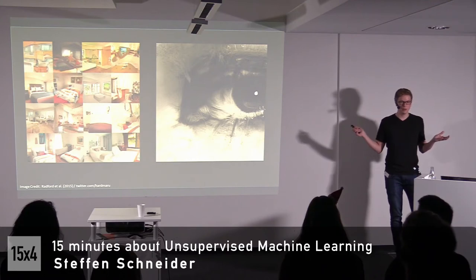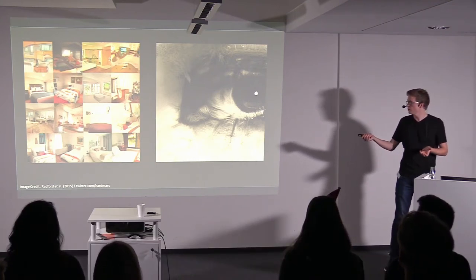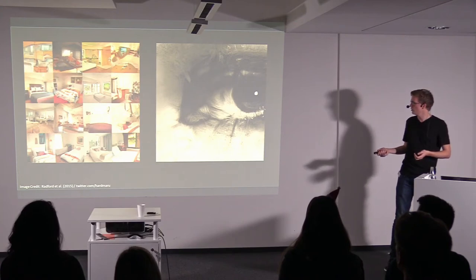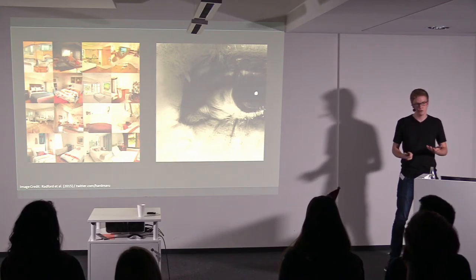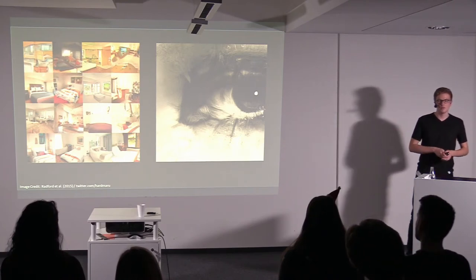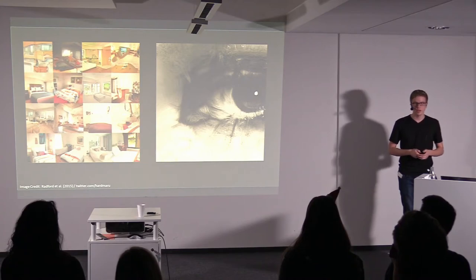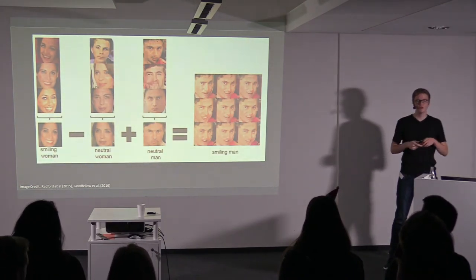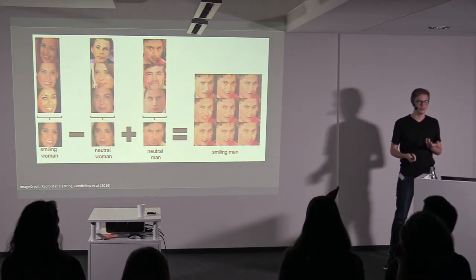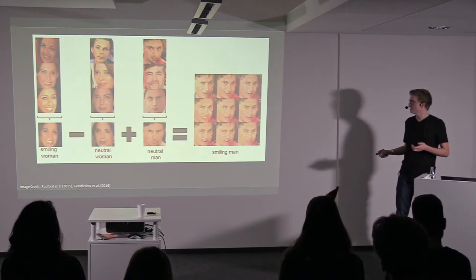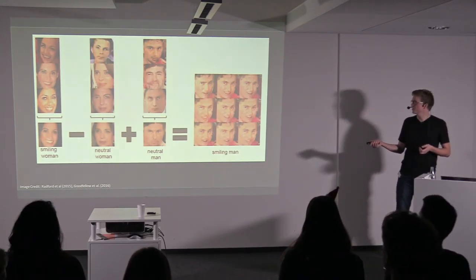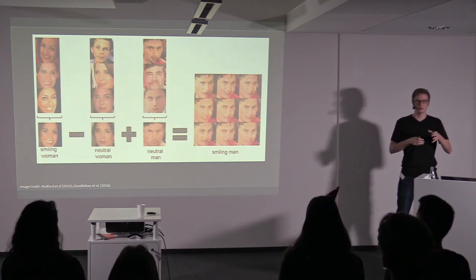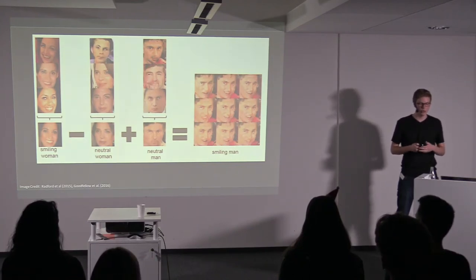With these algorithms we can do pretty amazing things nowadays. We can generate images - these images are not real, they are all generated by generative adversarial networks. Currently there is much work on generating really high-resolution images, which are not quite perfect but from the resolution it's already pretty amazing. Also, doing arithmetic in the image space is now possible - for example, transferring the attribute of a smile from a woman to a man using the feature representations that generative adversarial networks generate during training.